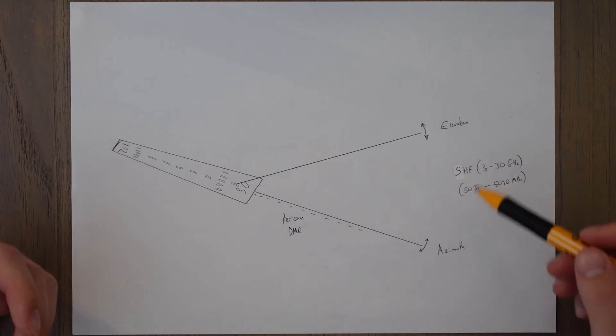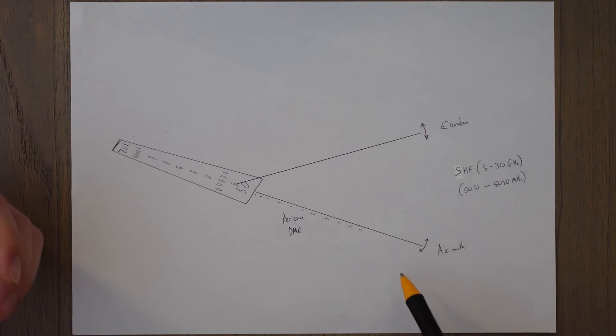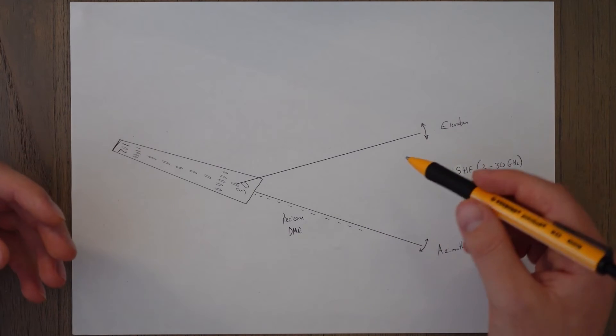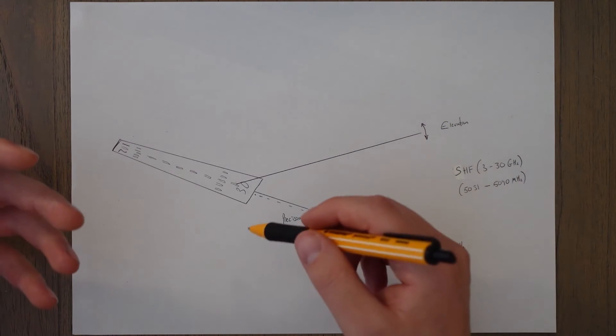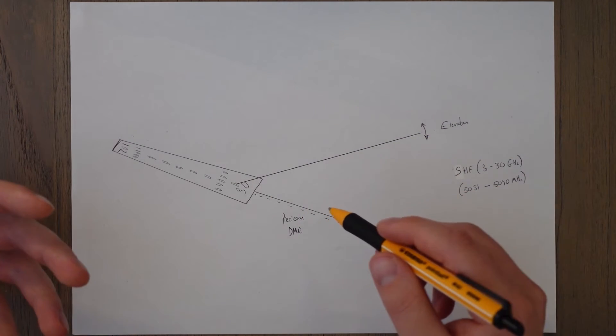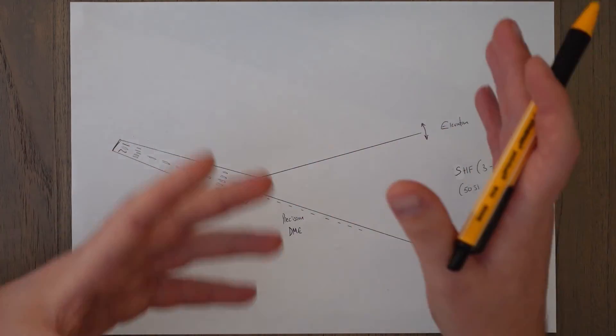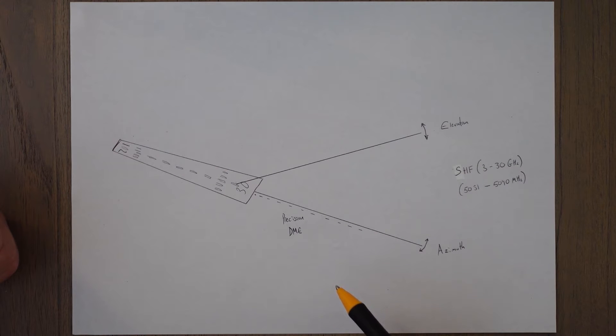So using the vertical and horizontal and the distance to go information, it's possible to create complicated approach procedures that follow curved routes and waypoints in space created by this 3D sort of wedge that is created in the microwave landing system.